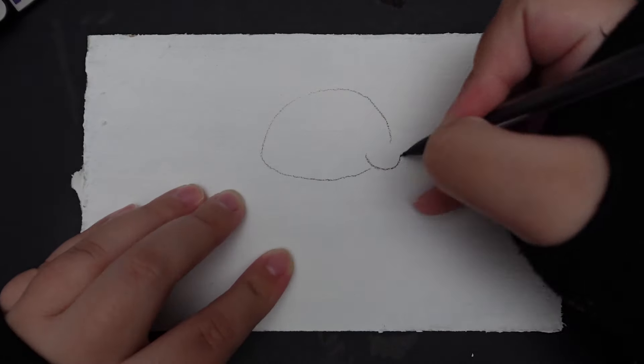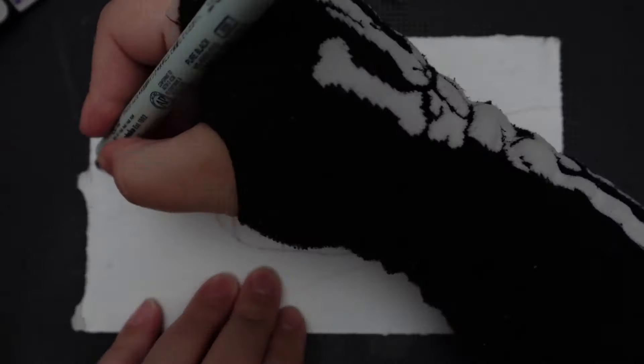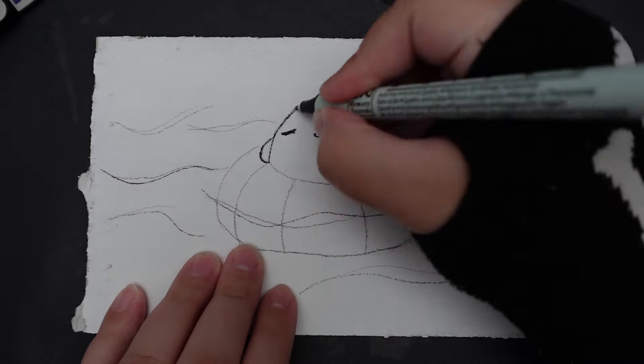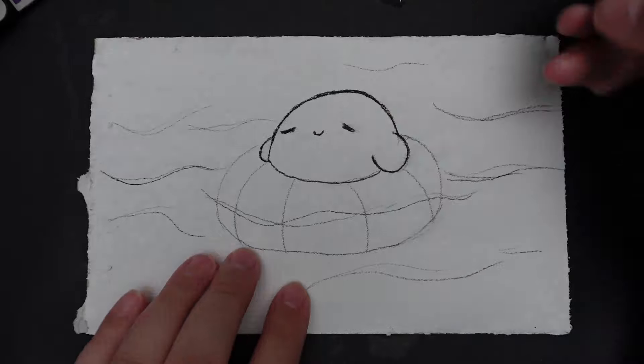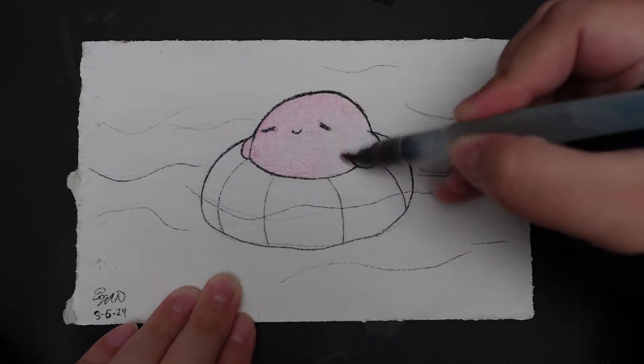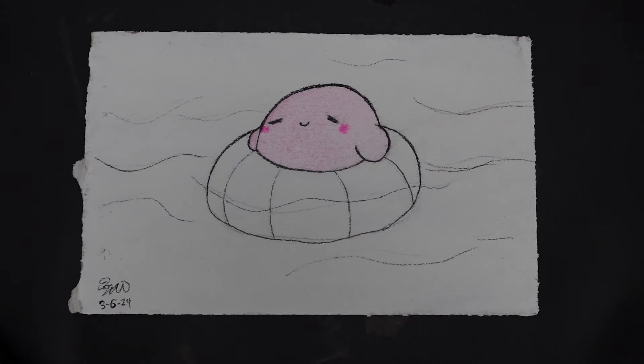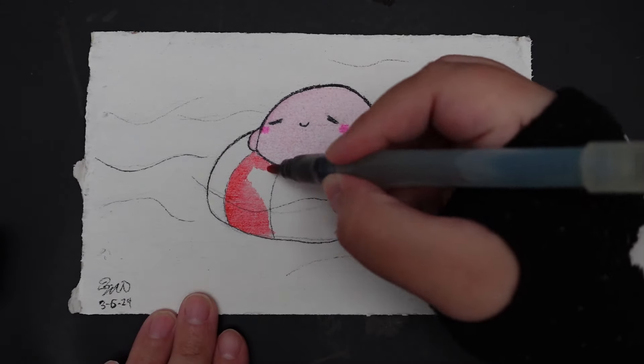Now for the illustration on the treated cardboard, I am drawing Kirby floating on an inner tube in the ocean being happy and cute. Now I approached the painting more carefully this time to avoid the bleeding out since that was an issue previously.